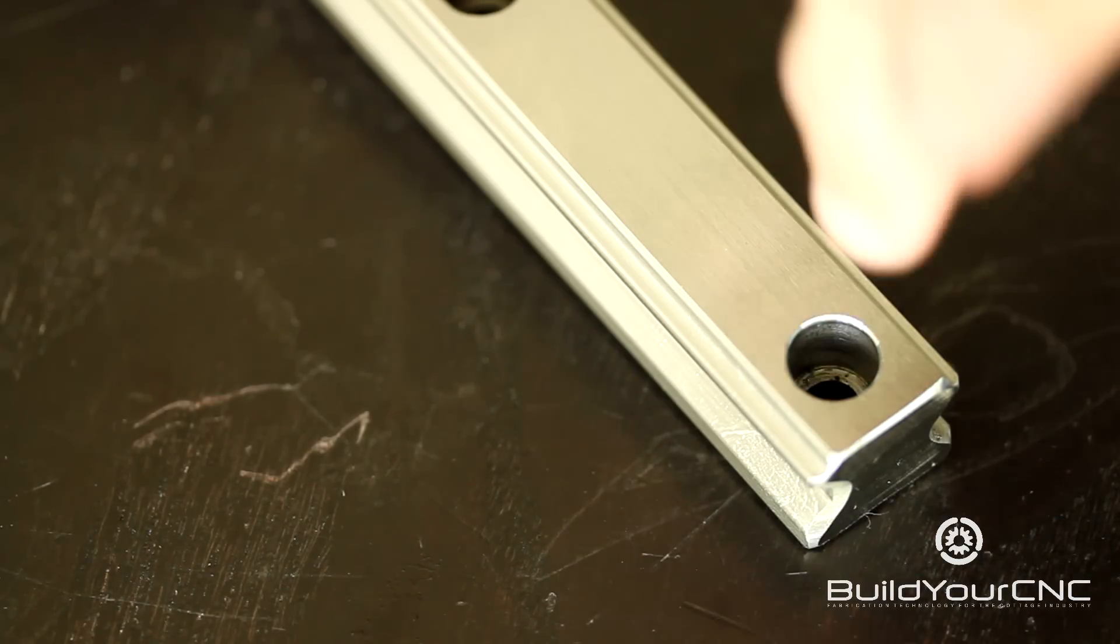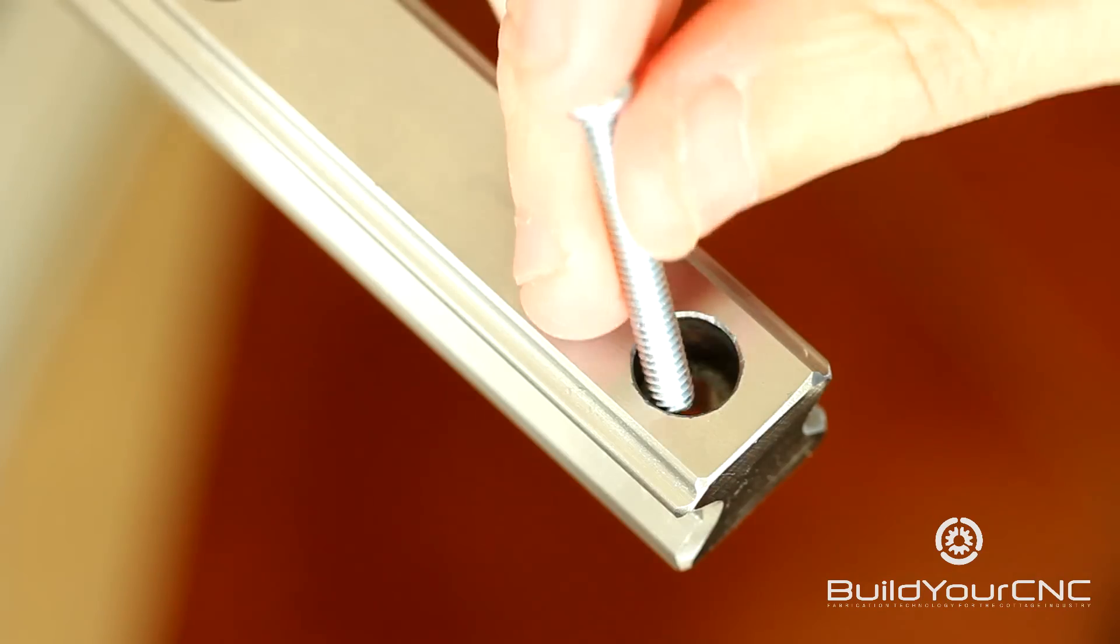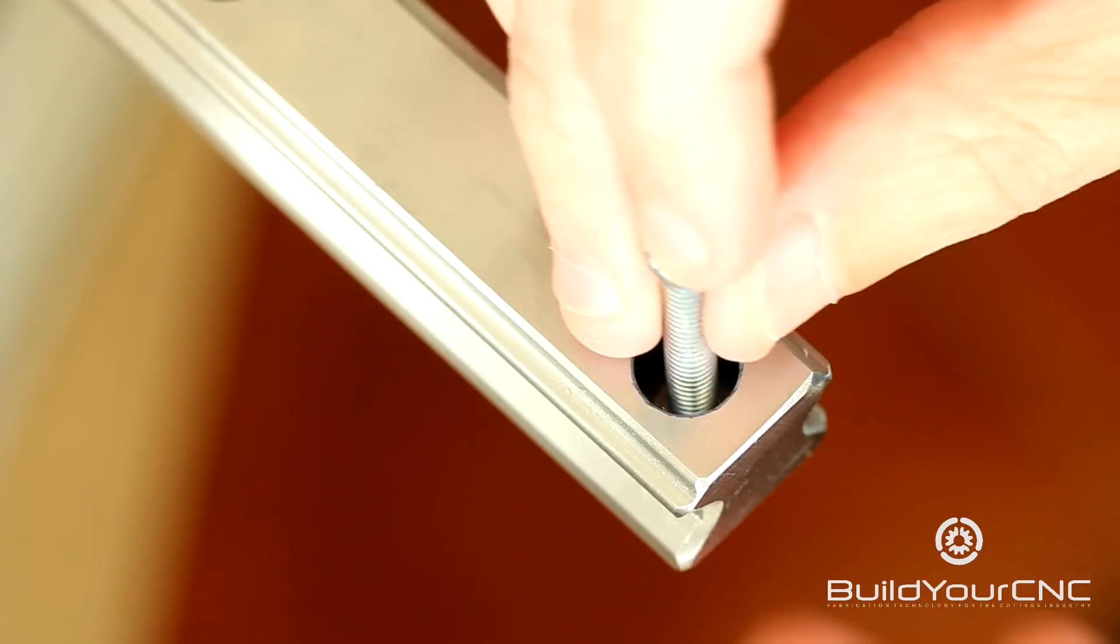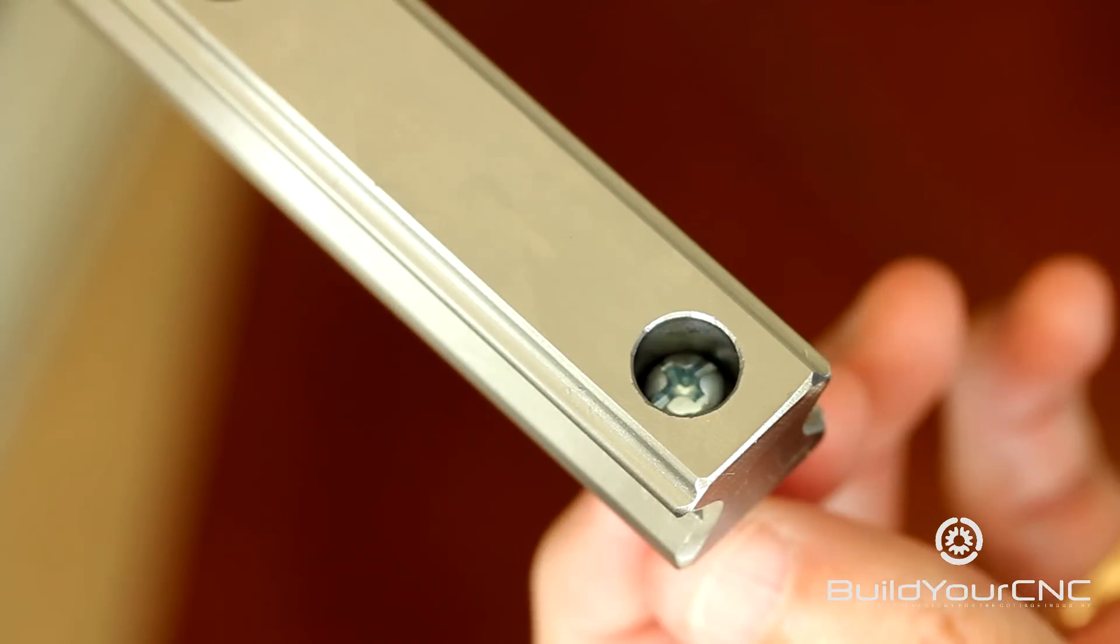So you would mount it with the screw going in in this direction. You can use a number 8, a number 10 or an M5 screw for mounting the rail.